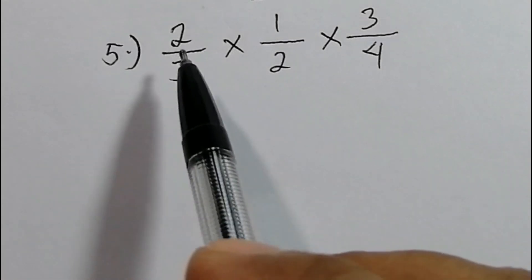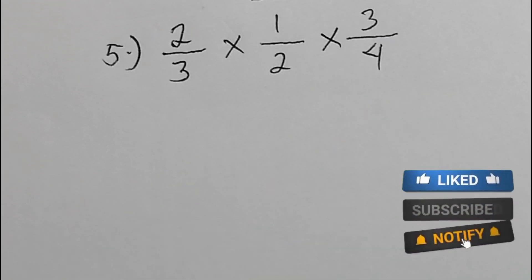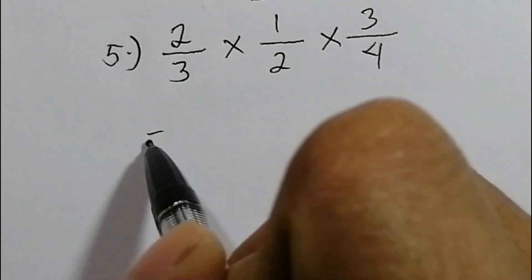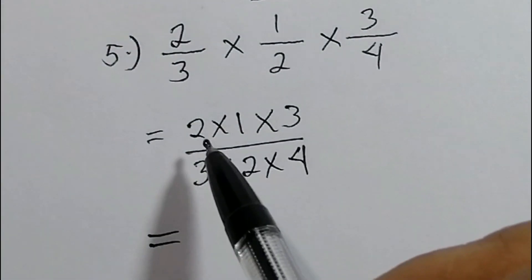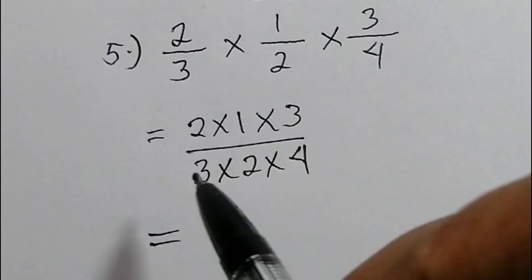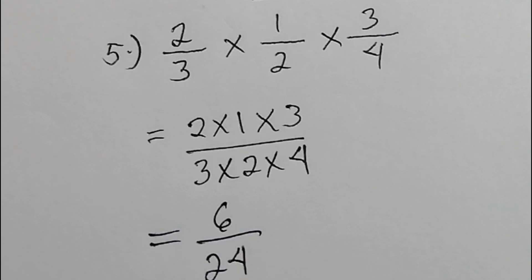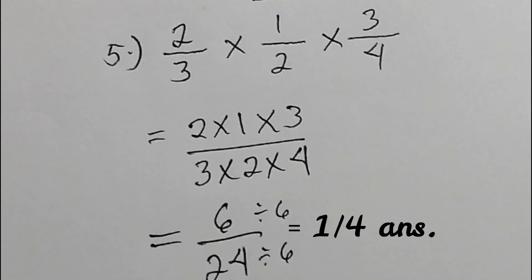So another problem. We have two-thirds times one-half times three-fourths. So ito'y tinatawag natin dissimilar fractions kasi iba-iba yung kanilang denominator. Now, paano natin siya multiply? The same process. Numerator to numerator, denominator to denominator. So we're gonna write two times one times three over three times two times four. So two times one, two times three, six over three times two, six times four is twenty-four. Ngayon ang tanong, pwede natin i-reduce sa lowest term. Paano? So ang six ba pwede yung divide sa twenty-four? Yes. So ang gagawin natin, i-divide natin ito sa six. Six divided by six is one. Twenty-four divided by six is four. So this is our final answer. One-fourth is our final answer.